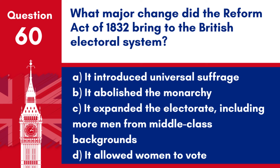Question 60. What major change did the Reform Act of 1832 bring to the British electoral system? a. It introduced universal suffrage. b. It abolished the monarchy. c. It expanded the electorate, including more men from middle-class backgrounds. d. It allowed women to vote.